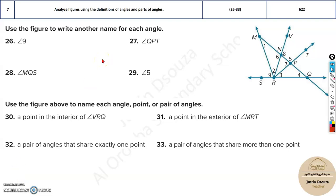The seventh topic is about definition of angles and parts of angles. Here they have asked to write another name for particular angles, say angle 9. You can see in the figure the angle is over here, 9.